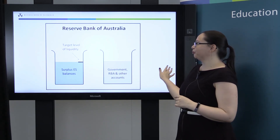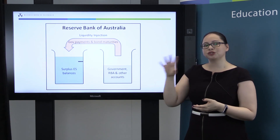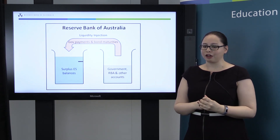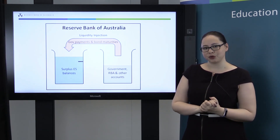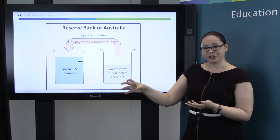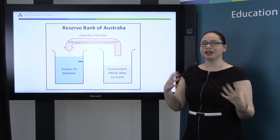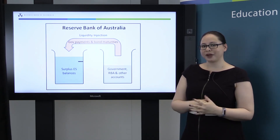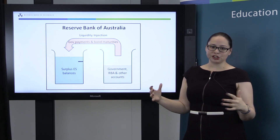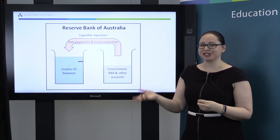Suppose we have a transaction going from one of these government or other accounts to the surplus ES balances. An example of this might be when the government makes a payment — when they pay pensions or give a grant to a school. In this case, funds would go from a government account to surplus ES balances: the government account would decrease and surplus ES balances would increase, increasing the total supply in the market. Because we're adding liquidity to the market, we would call this a liquidity injection. Another example of a liquidity injection would be when a government bond matures — the funds are returned to the bond holder and surplus ES balances increase.